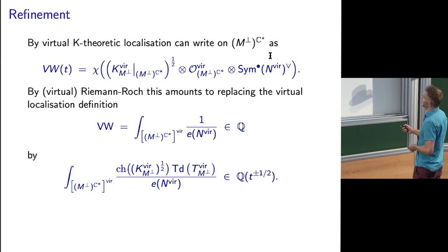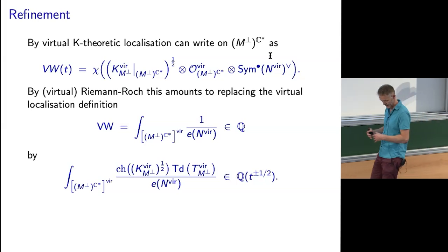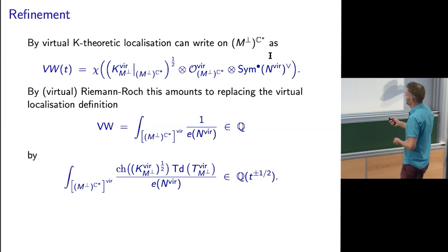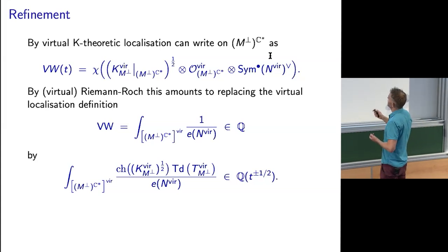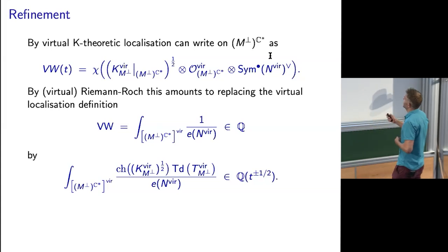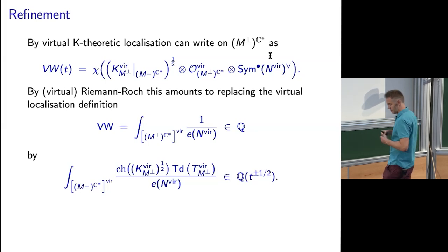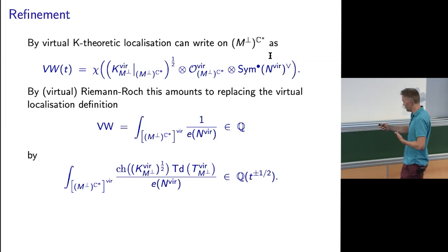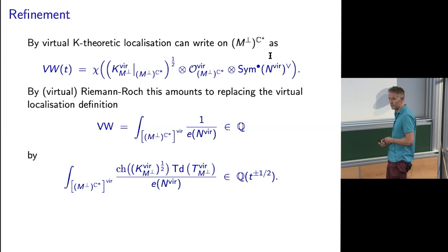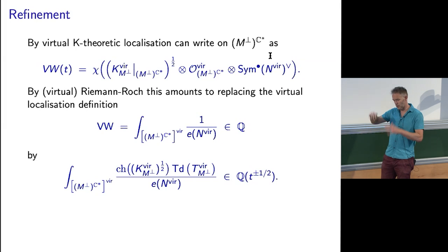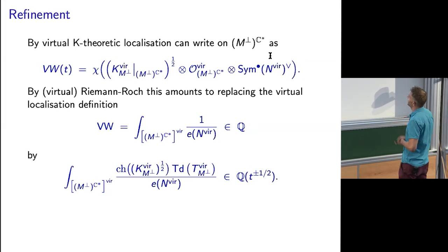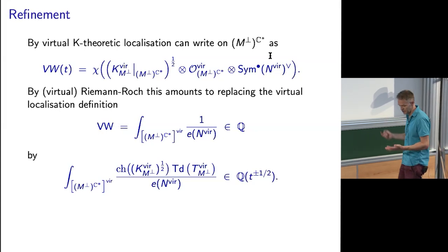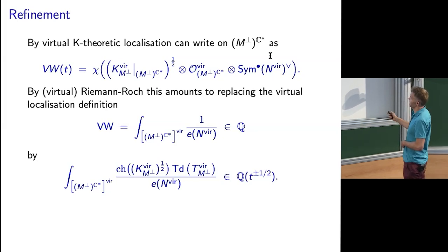I can localize by K-theoretic localization to the fixed point locus. When you want to take sections of a line bundle on the whole moduli space, you approximate by the fixed locus and its normal bundle. Functions on the normal bundle are the symmetric powers of the dual normal bundle. So you end up with this symmetric power of the dual normal bundle, giving this localization formula. Using Riemann-Roch you can express it cohomologically in terms of the original cohomological invariants — all you're doing is changing the cohomological invariant to this one.